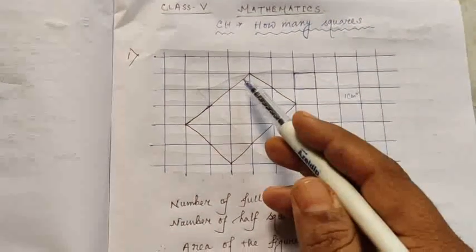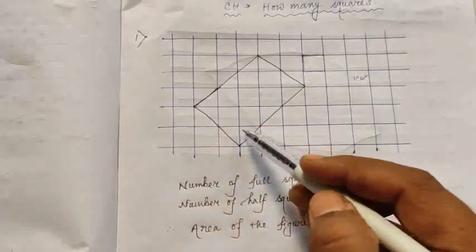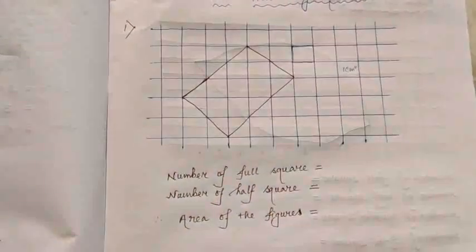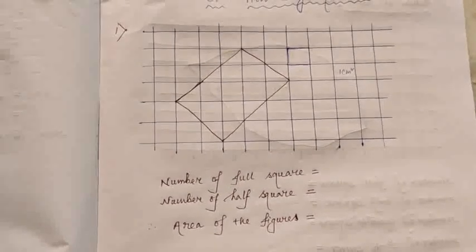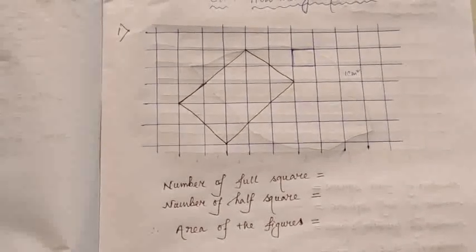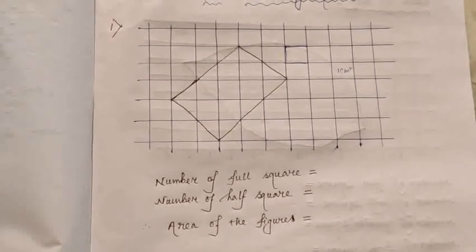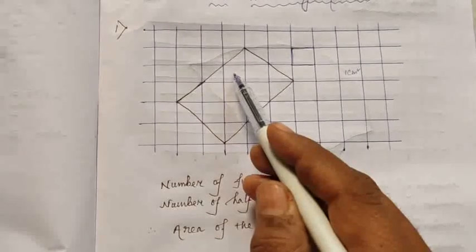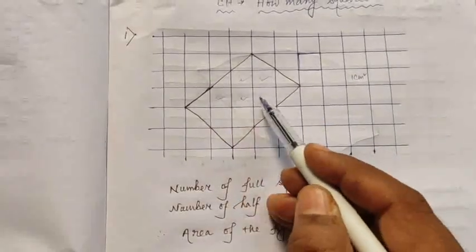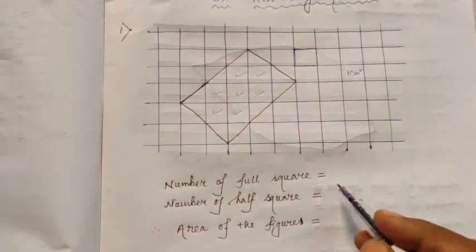Now we have to find out the area of this shape. To find out the area, first of all we have to check how many full squares are there and how many half squares are there. Here we can see there are seven full squares.